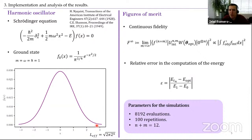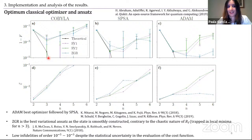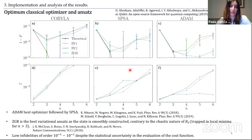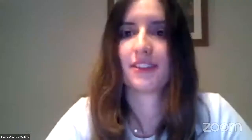On prospects for quantum advantage from variational algorithms: currently, practical quantum advantage cannot be achieved with this approach. The number of measurements must be increased substantially to obtain good energy estimates, which is not feasible given current quantum device access limitations and temporal stability constraints. Beyond the measurement limitation, the classical optimization also has challenges such as barren plateaus that need further study.